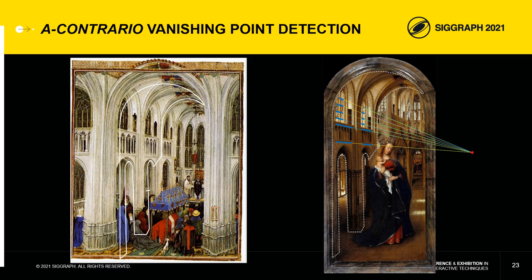This collage probably comes from a miniature in the Turin-Milan Hours attributed to Hand G, who many believe to be Jan van Eyck. This miniature has exactly the same vanishing point as the Madonna in the Church, and the same geometric inconsistency at the level of the line joining the keystones, which should meet the vanishing point.